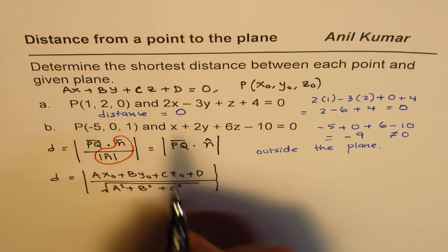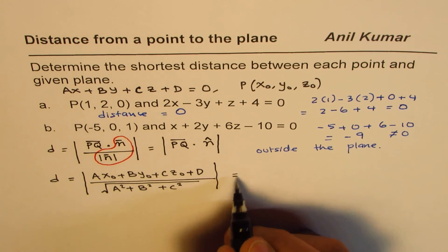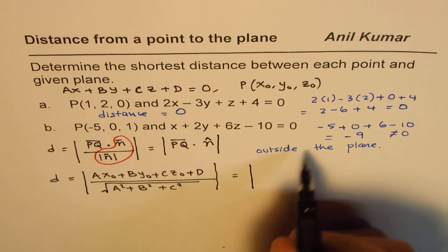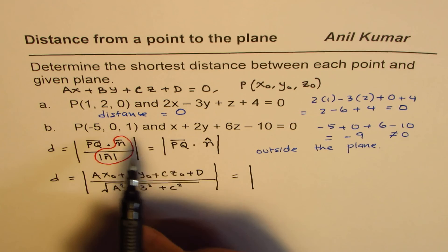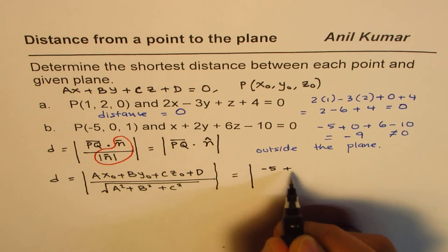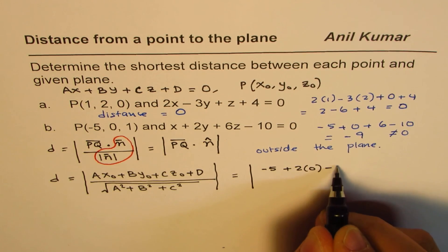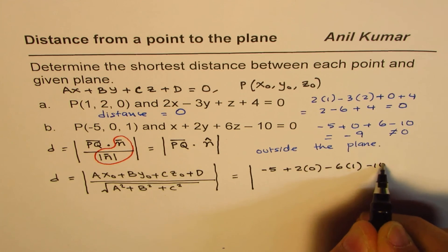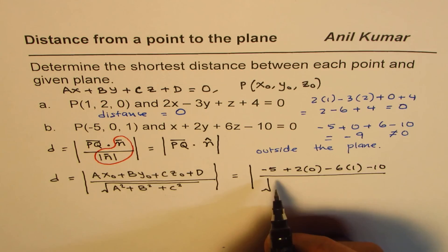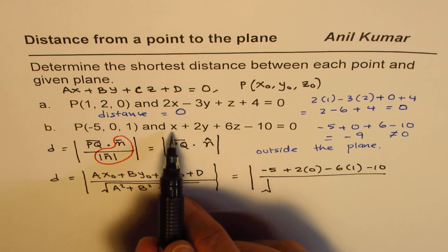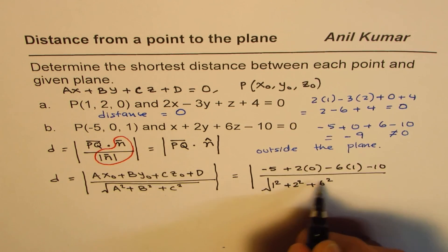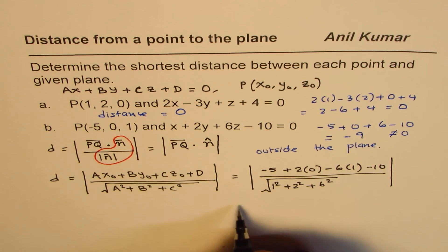So, we are now finding, we know the distance for a is 0, and let's find for b. So, we already substituted this value. We got that. But anyway, let's rewrite. So, we will write this as, substituting the point, we get minus 5 plus 2 times 0 plus 6 times 1 minus 10.